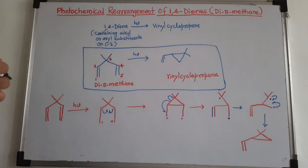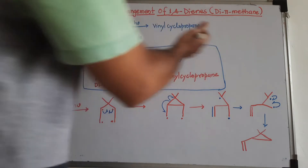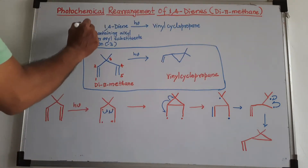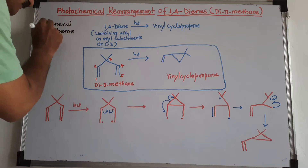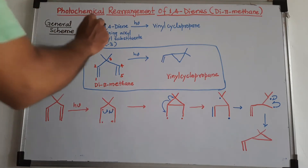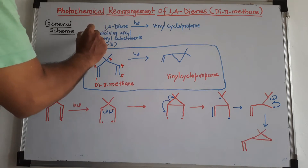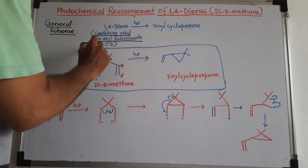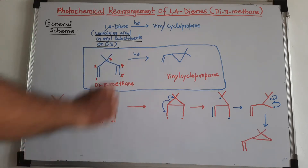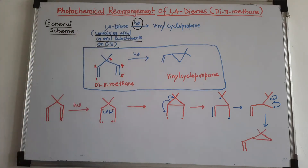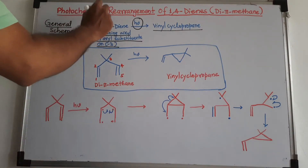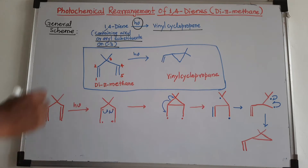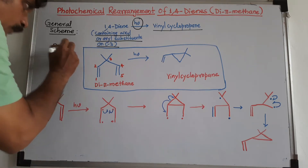We are discussing the photochemical rearrangement of 1,4-diene. This 1,4-diene is also called divinylmethane — we will see why. Here I have shown the general scheme of this reaction. We take a 1,4-diene containing an alkyl or aryl substituent at carbon number 3, and when irradiated with light of a certain wavelength, it is converted to vinyl cyclopropane. This reaction is called photochemical rearrangement of 1,4-diene.